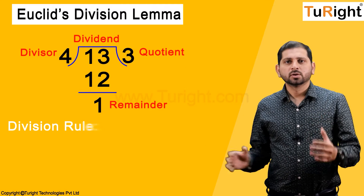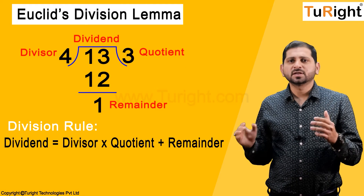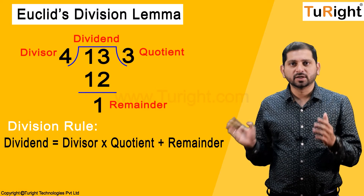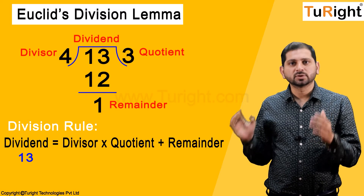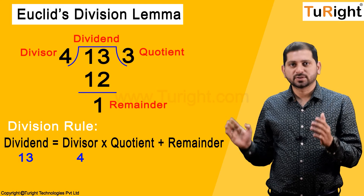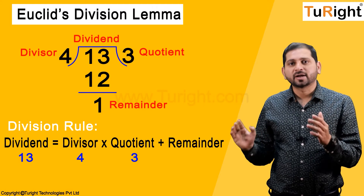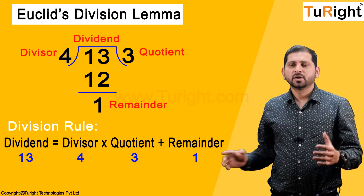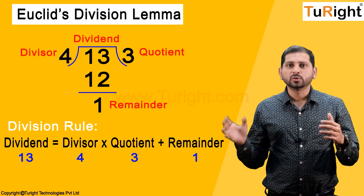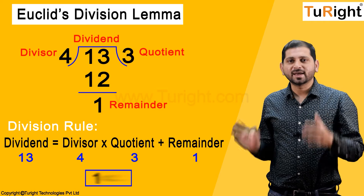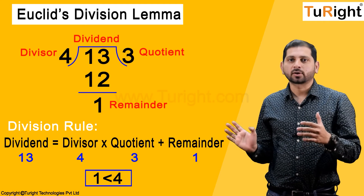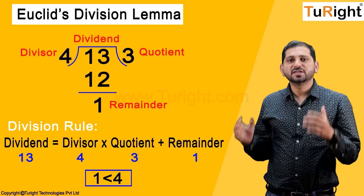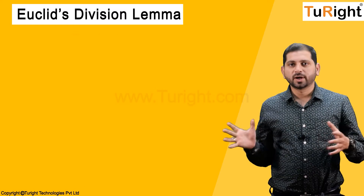According to the division rule, we write: dividend = divisor × quotient + remainder. Here, dividend is 13, divisor is 4, quotient is 3, and remainder is 1. We stopped when the remainder was 1, because 1 is less than 4 — meaning if the remainder becomes less than the divisor, we stop the division process.